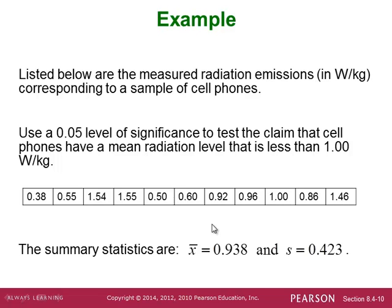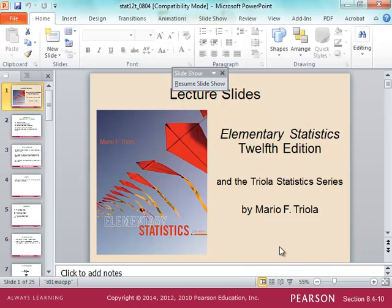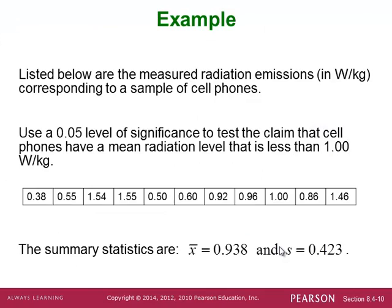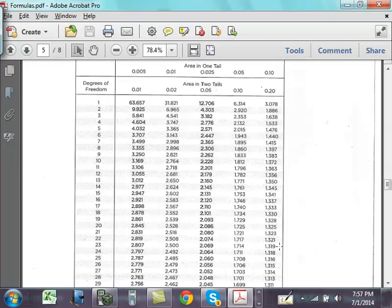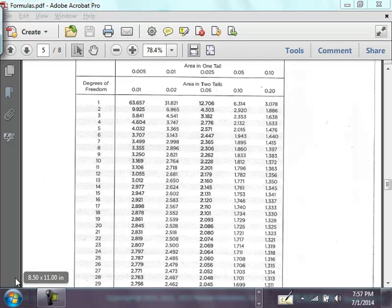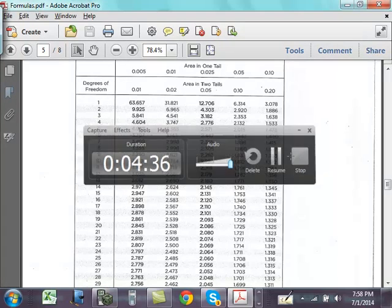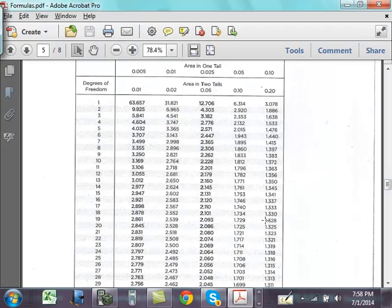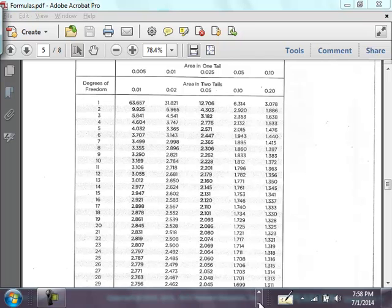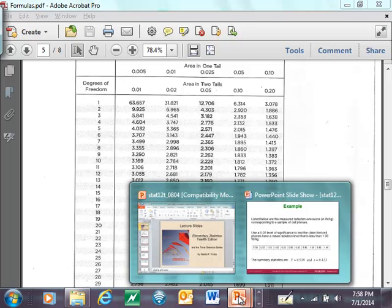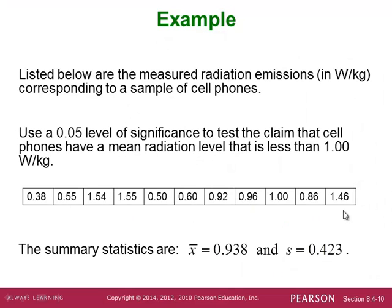Add up these numbers, divide by 11, you get x-bar is equal to approximately 0.938. And if you were to calculate the standard deviation for these 11 numbers, you get 0.423. So we've got our samples, 11 numbers here, we calculate the mean and standard deviation for the sample.